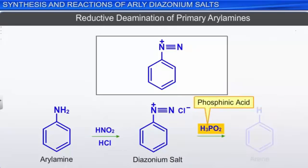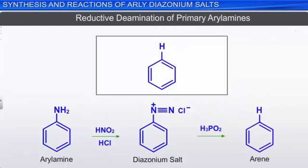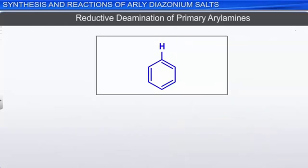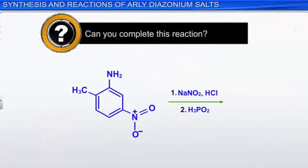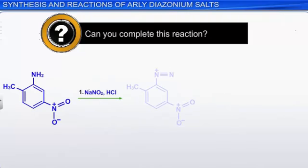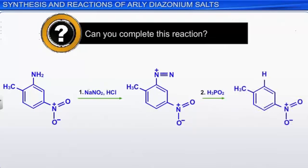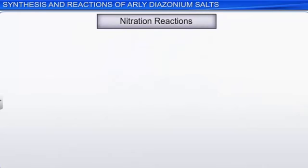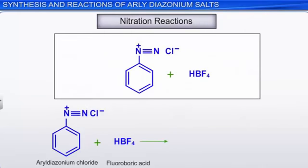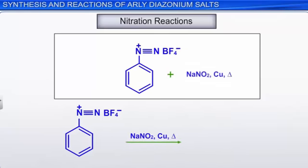Reductive deamination of primary aryl amines replaces the amino substituent by hydrogen using a diazonium salt as an intermediate. When the diazonium salt is treated with a mild reducing agent such as hypophosphorous acid (also known as phosphinic acid), the diazonium ion is reduced to an arene. Alternatively, this can be carried out using ethanol. Nitration reactions replace the diazonium group with a nitro group: first prepare diazonium fluoroborate by reacting the aryl diazonium chloride with fluoroboric acid, then heat the diazonium fluoroborate with aqueous sodium nitrite in the presence of copper, and the diazonium group is replaced by a nitro group.